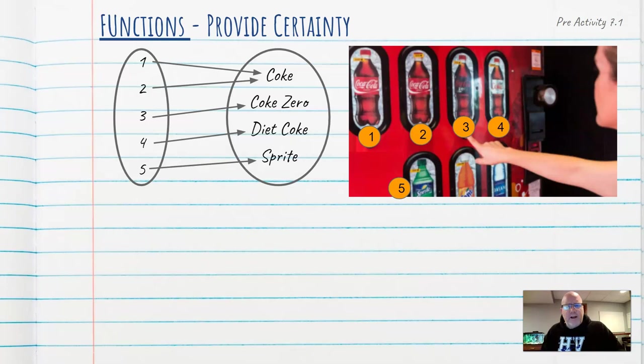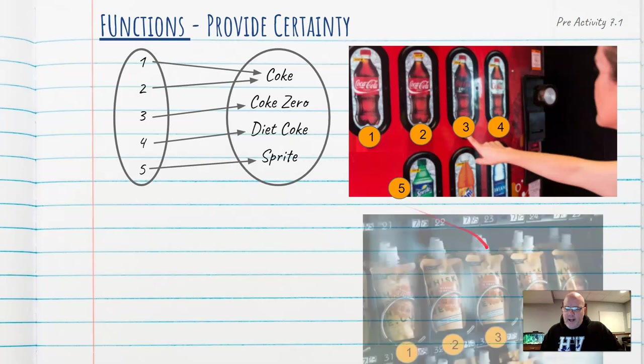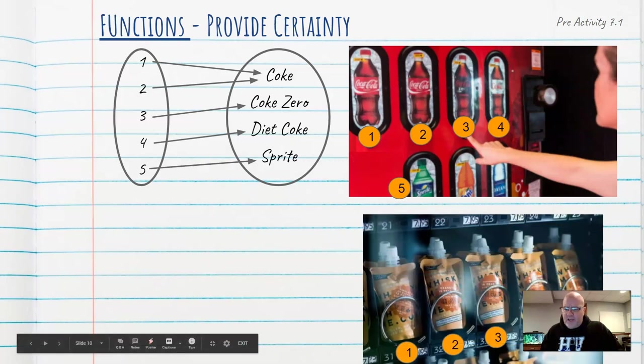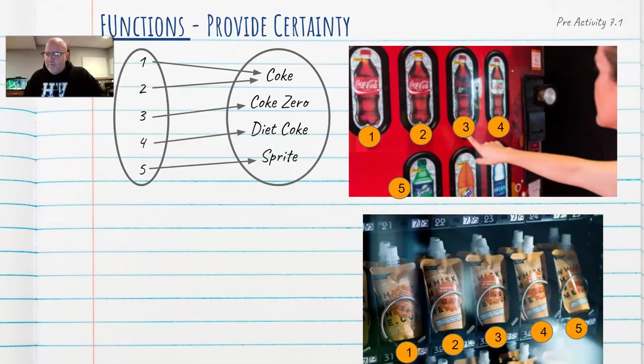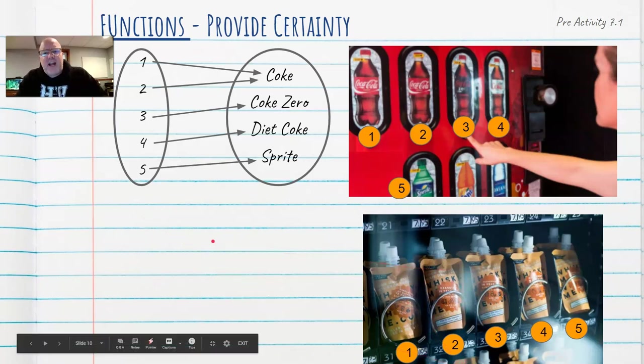If I hit button one, I get a Coke. If I hit button two, I get a Coke. And so on and so forth. How about this type of vending machine here? Let me move my picture up here. Here's a vending machine that has all just the same snack in it.